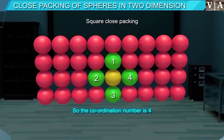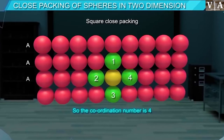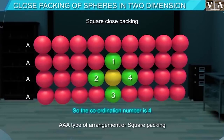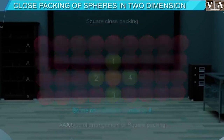If we call the first row as A type, the second row being exactly the same as the first row is also called A type. If we keep placing such rows one above the other, this arrangement is known as AA type or square packing.